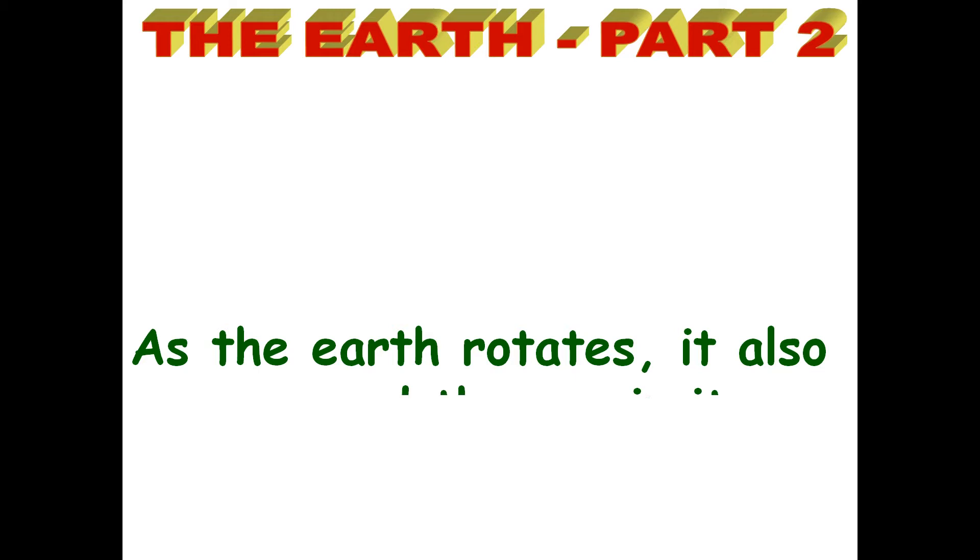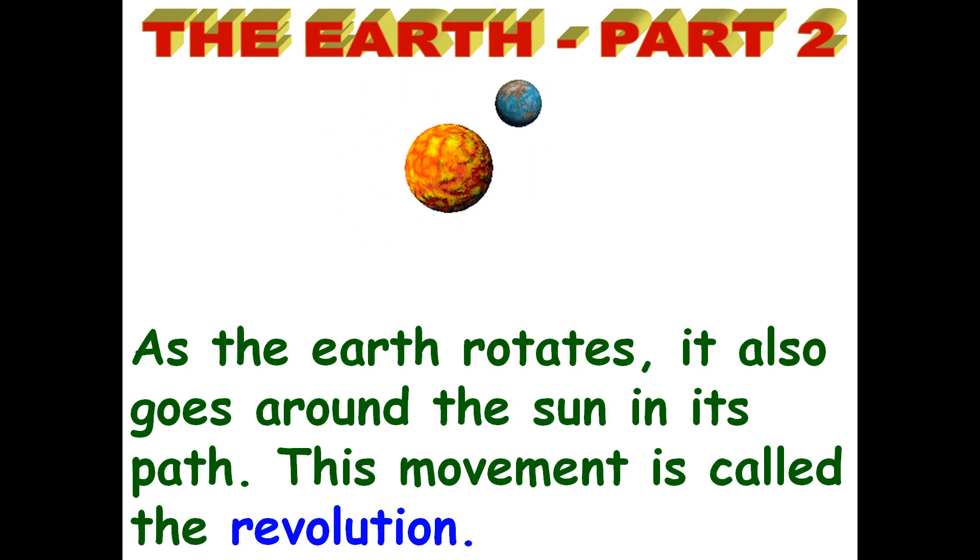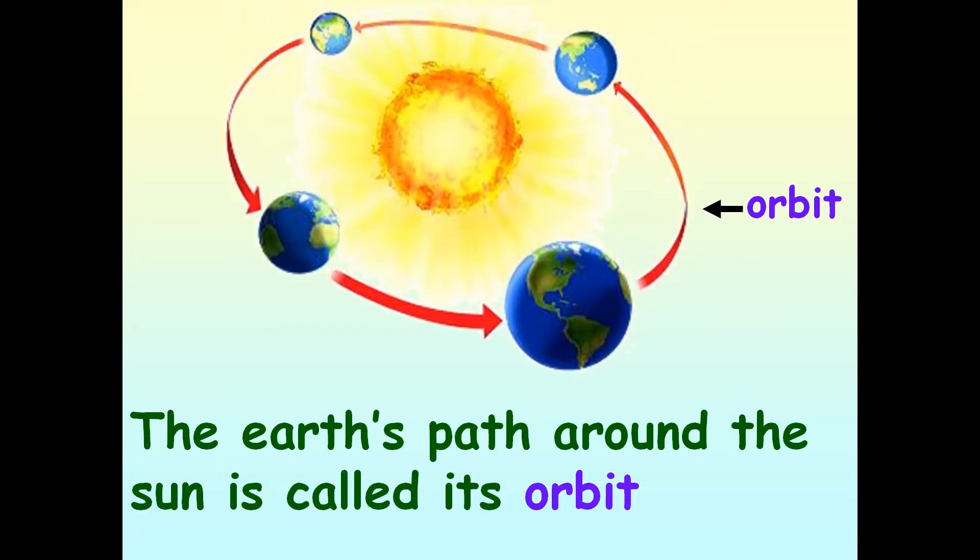As the earth rotates, it also goes around the sun in its path. This movement is called the revolution. The earth's path around the sun is called its orbit.